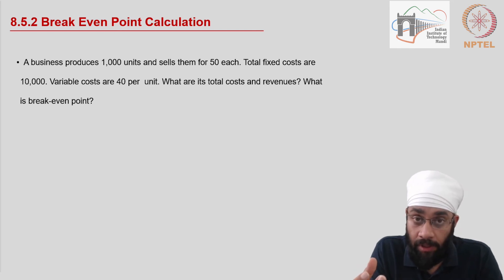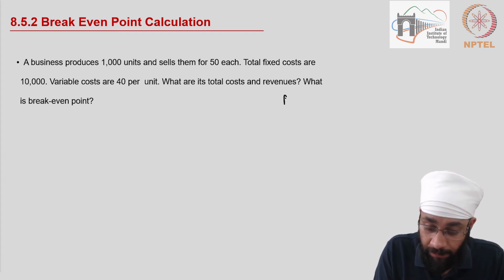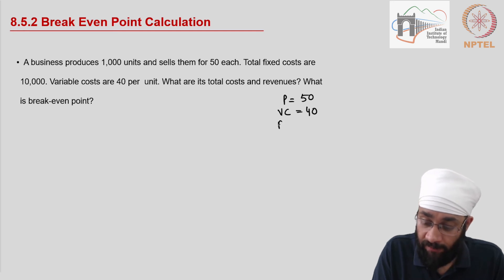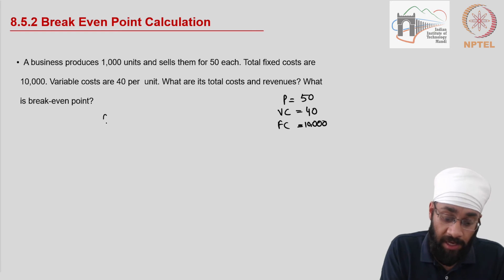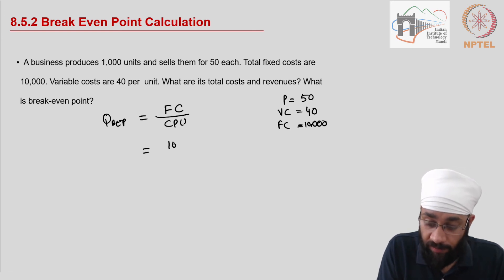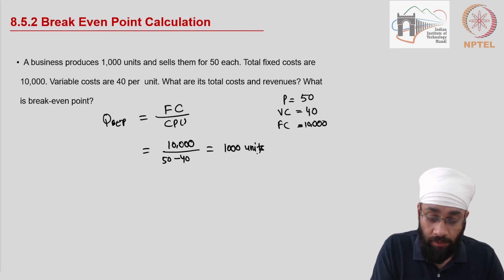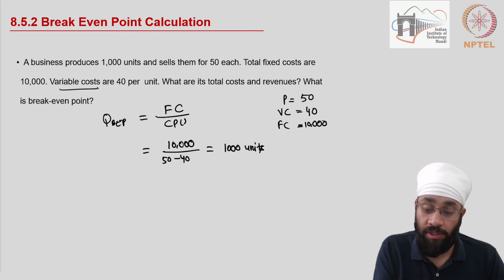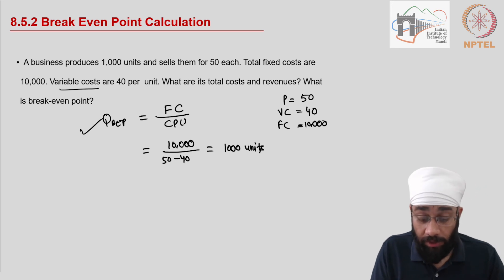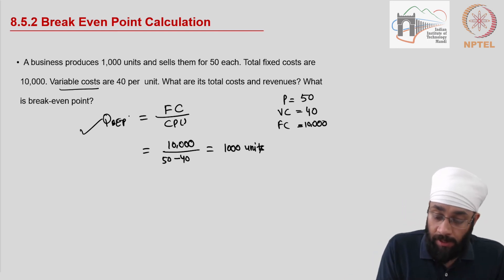Now let's look at an example. The price is 50 per unit, variable cost is 40 per unit, and fixed cost is 10,000. The break-even quantity is calculated by dividing fixed cost by contribution per unit: 10,000 divided by (50 − 40) = 10, giving 1,000 units as the break-even point. Without looking at too many numbers, if you know the variable cost, price, and fixed cost, you can easily figure out the break-even quantity.